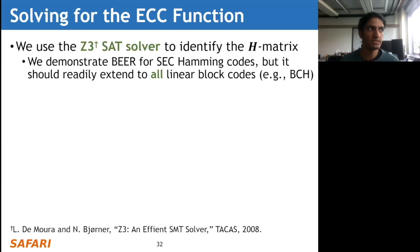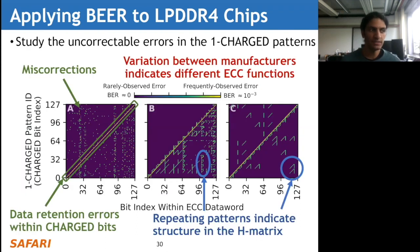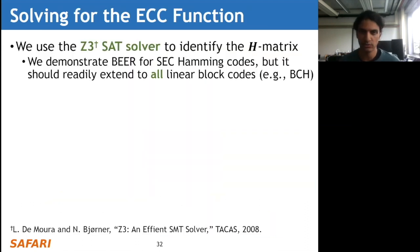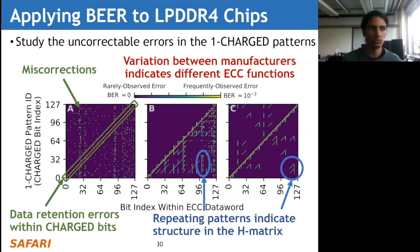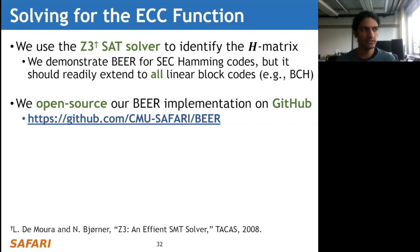Our takeaways: different manufacturers appear to use different on-die ECC functions - not obvious from the data sheets - and chips of the same model number appear to use identical ECC functions, since repeating this analysis for multiple chips from the same model yields the same error profiles. With these error profiles, we use the Z3 SAT solver to identify the parity check matrix. Although we demonstrate BEER for these single-error-correcting Hamming codes, it should readily extend to all linear block codes, including BCH codes or Reed-Solomon codes. Given the observations, we feed these into the SAT solver along with the properties of an error correcting code and ask it to give us an H matrix satisfying those constraints. We open-source our BEER implementation on GitHub.